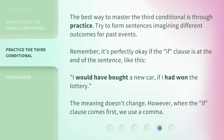The best way to master the third conditional is through practice. Try to form sentences imagining different outcomes for past events. Remember, it's perfectly okay if the 'if' clause is at the end of the sentence. Like this: I would have bought a new car if I had won the lottery. The meaning doesn't change. However, when the 'if' clause comes first, we use a comma.